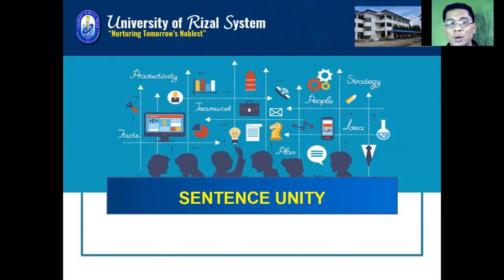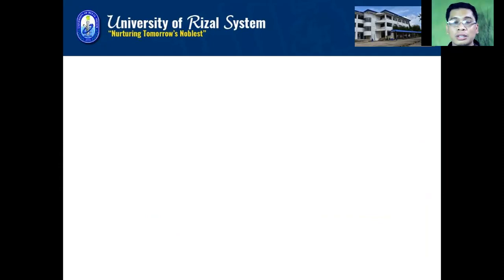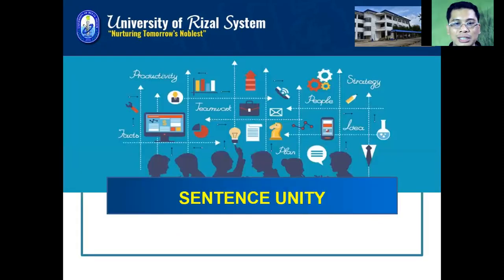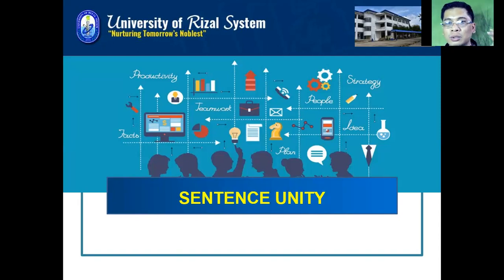When we talk of sentence unity, we are pertaining to how the words in a sentence are related in terms of their function and form. We have to see to it that the ideas are in consonance with the ideas present in the whole sentence. I will be mentioning the different faults and how we are going to correct them. The main objective of sentence unity is to make the ideas connected with one another through following a parallel form and parallel function.